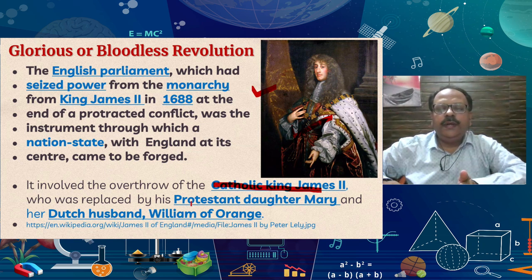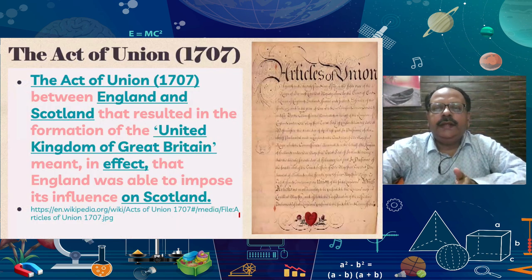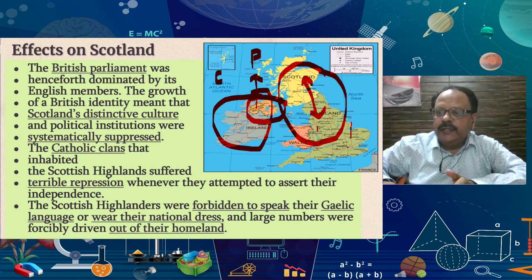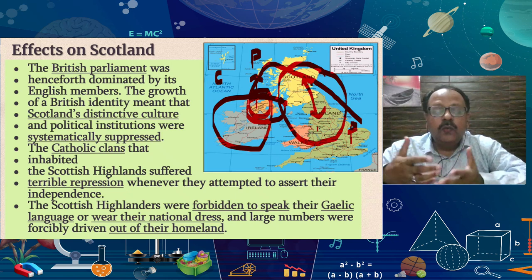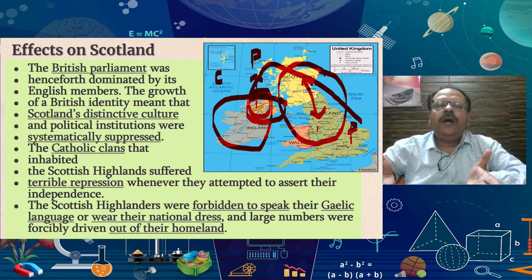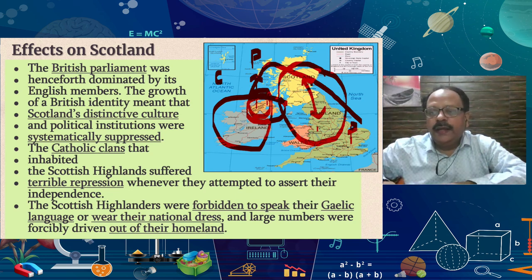In the Glorious Revolution, King James II was Catholic, but his Protestant daughter Mary and William of Orange took power. In this way, England became Protestant — the Protestant branch was adopted. The Protestant branch was also founded in Northern Ireland, and its population grew in Northern Ireland. The northern part of Ireland was dominated by England.